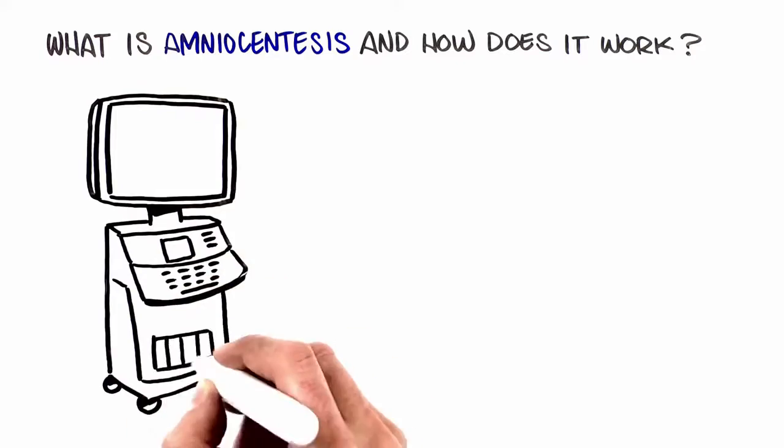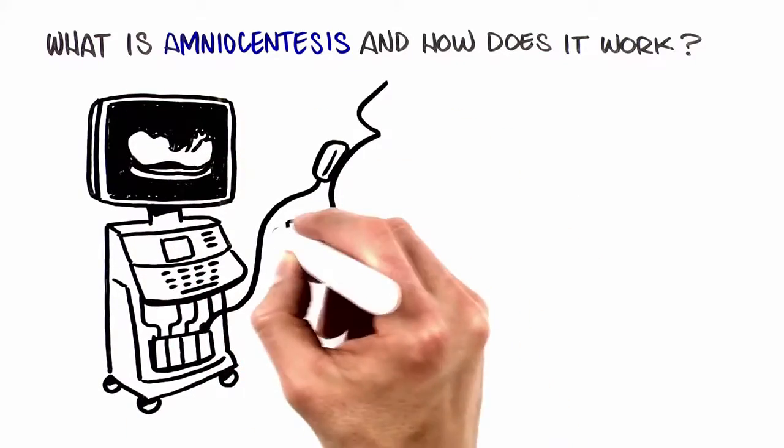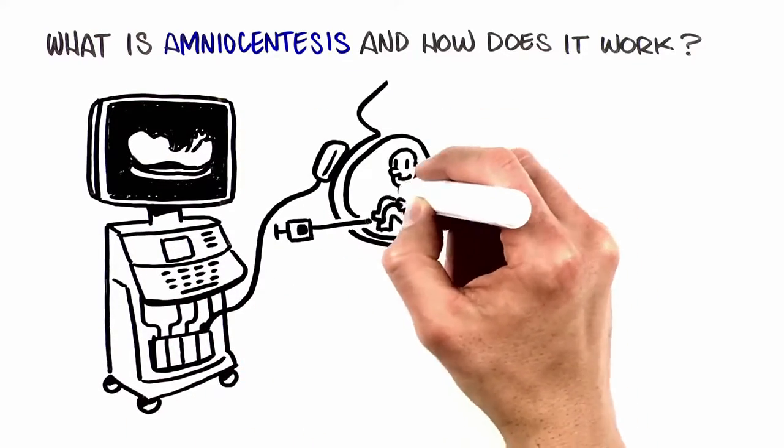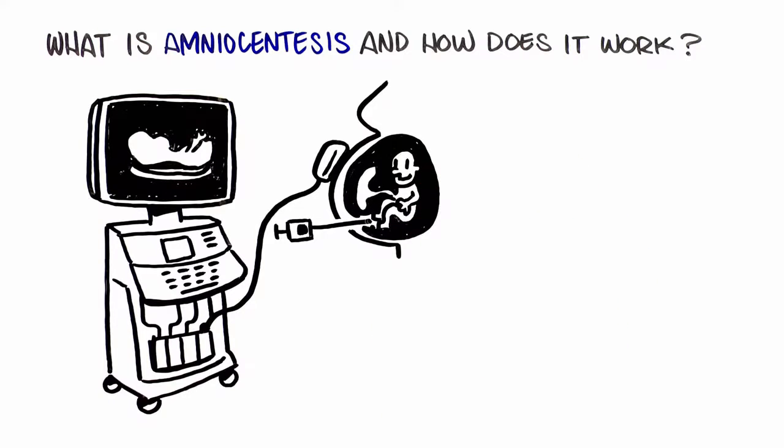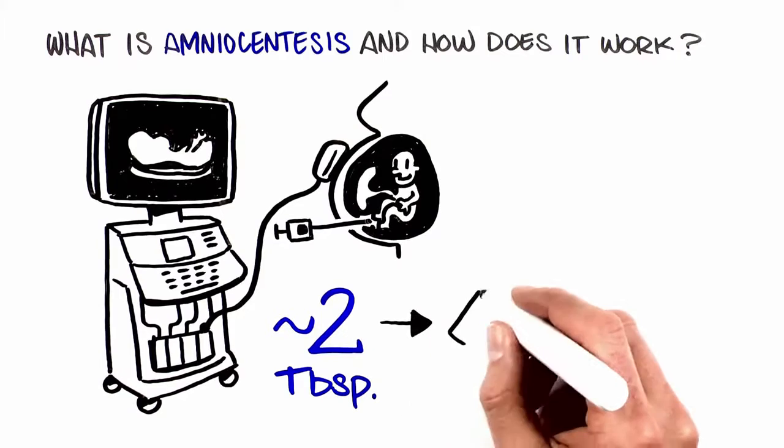Using ultrasound as a guide, a very thin needle is inserted through the mother's abdomen into the amniotic sac, a fluid-filled area surrounding the baby. A small amount of fluid is withdrawn and sent to the laboratory for testing.